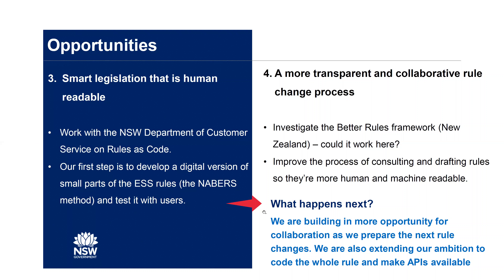The opportunity we're pursuing in the smart legislation space is working with the Department of Customer Service on rules as code. There's a lot of information available on this topic online. We're developing a digital version of small parts of the ESS rule — there's a NABERS methodology for commercial buildings energy savings — and we're testing that with users. We're also making progress on a transparent and collaborative rule change process by investigating a better rules framework from New Zealand, improving our consulting and drafting process, building in more collaboration opportunities, and extending the ambition to code the whole Energy Savings Scheme rule and eventually make APIs available.